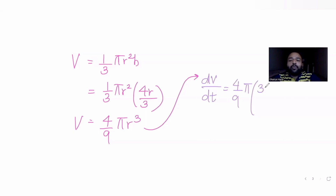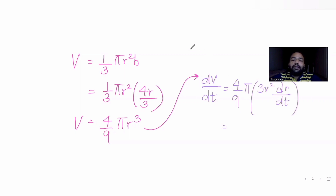Differentiating volume with respect to time, dV/dt equals (4/9)π times 3r² dr/dt. Simplifying, the 3 and 9 cancel to give (4/3)π r² dr/dt.